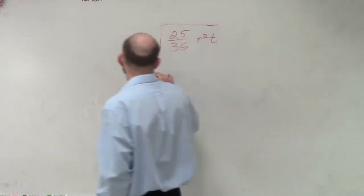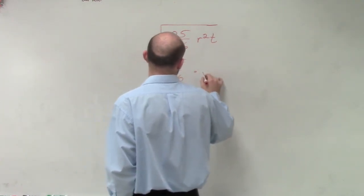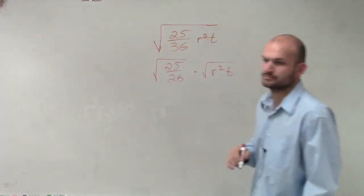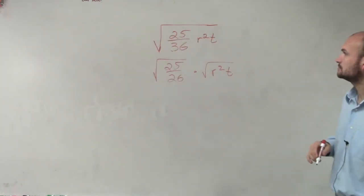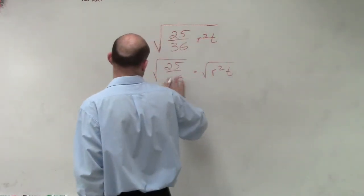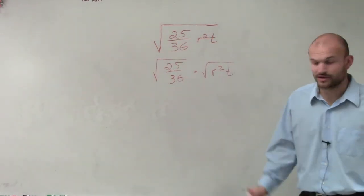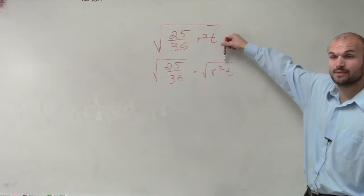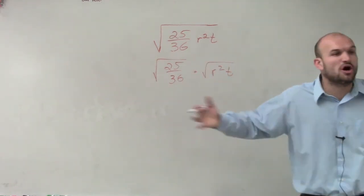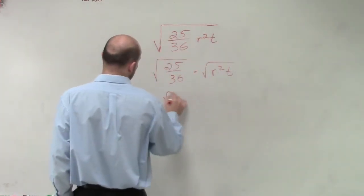We can rewrite this as the square root of 25 over 36, times the square root of r squared t. Then we can simplify it further — by the product rule and then by the quotient rule. I'm just going to break it all up so I'm not trying to overly confuse myself with what exactly all these terms are.